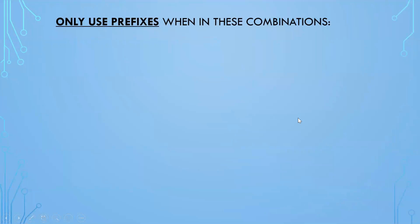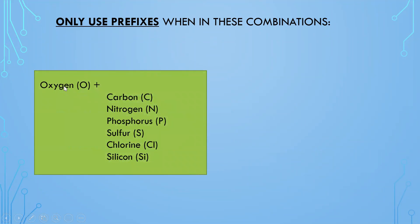You also need to know when to use prefixes, because you should not go prefix crazy. You're only going to use a prefix with special combinations — write these on the back of your periodic table. If you see oxygen combined with carbon, nitrogen, phosphorus, sulfur, chlorine, or silicon, you must use a prefix. It doesn't matter which of these comes first — it's just one of these combinations with oxygen. Usually oxygen comes second.